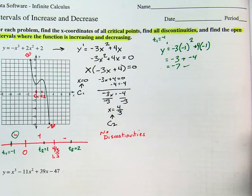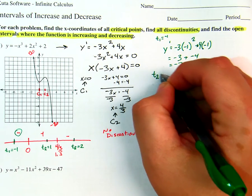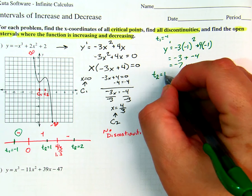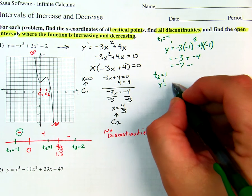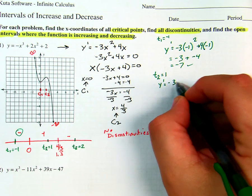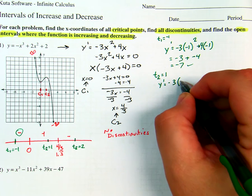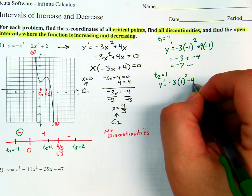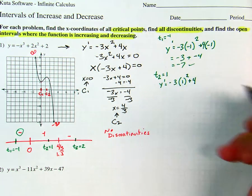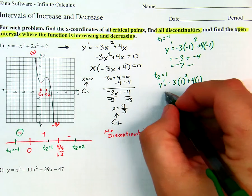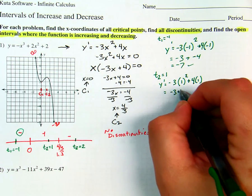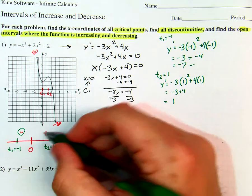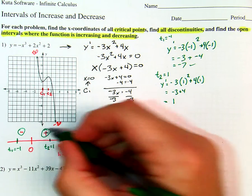For T2 equals 1: y prime equals negative 3 times 1 squared plus 4 times 1, which is negative 3 plus 4, equals positive 1. That checks out — those two check out.